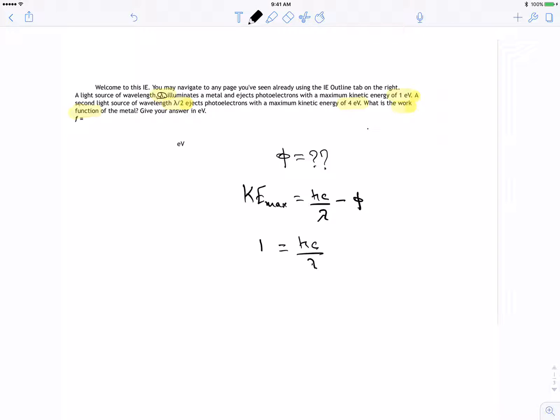hc divided by lambda minus the work function. For the second equation, it's 4 electron volts equals hc divided by lambda over 2, so the 2 goes up: 2hc divided by lambda minus the work function. We have two equations, two unknowns.